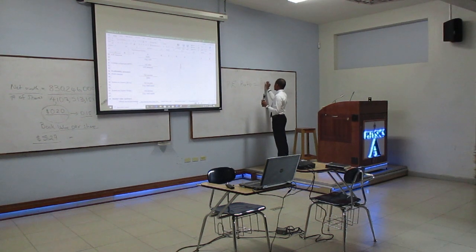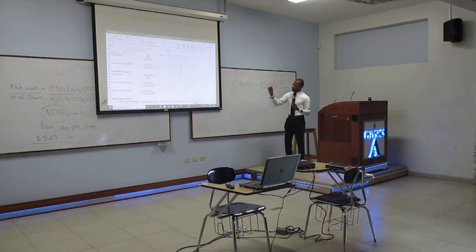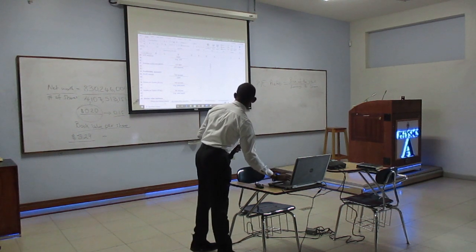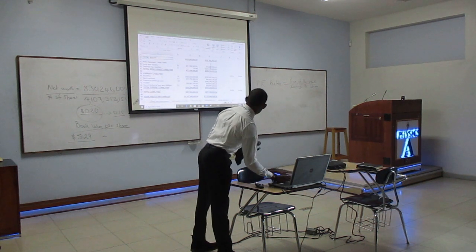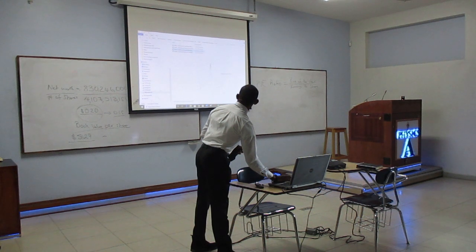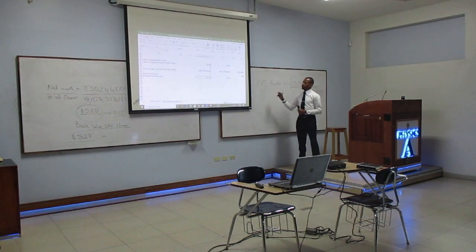The PE ratio is the price of the stock divided by the earnings per share. I'm going to calculate earnings per share — this is a historical number. We're using price per earnings per share.